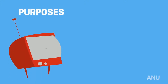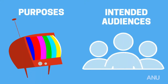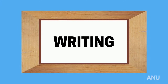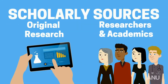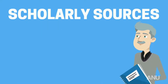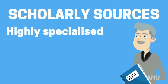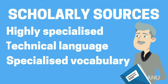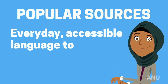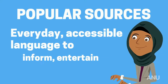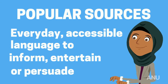They also have very different purposes and intended audiences, and this changes how they frame the writing. Scholarly sources present original research to other researchers and academics. This work often contains a lot of highly specialized technical language and a specialized vocabulary that you just don't see in popular sources, which use everyday accessible language to inform, entertain, or persuade the general public.